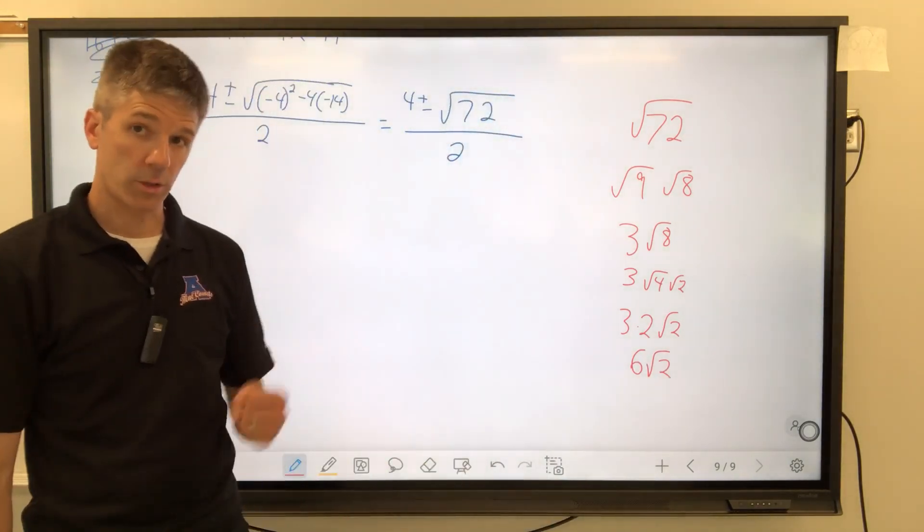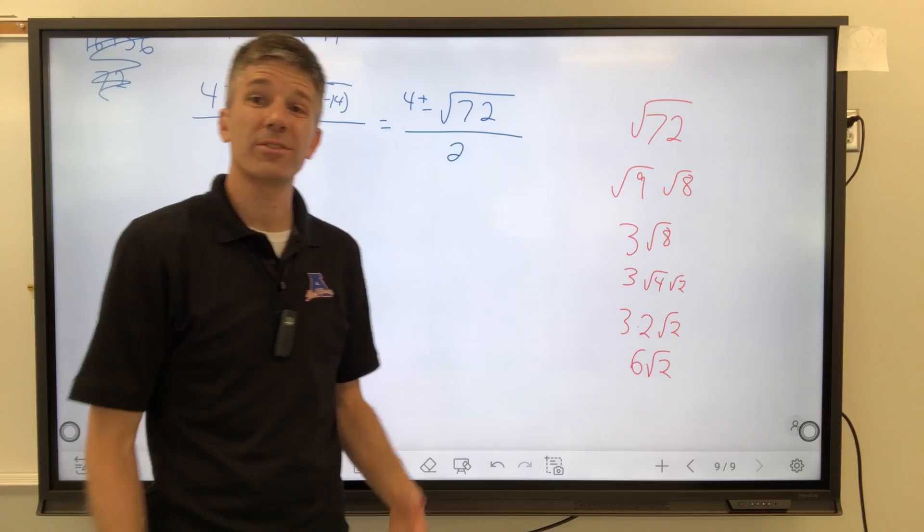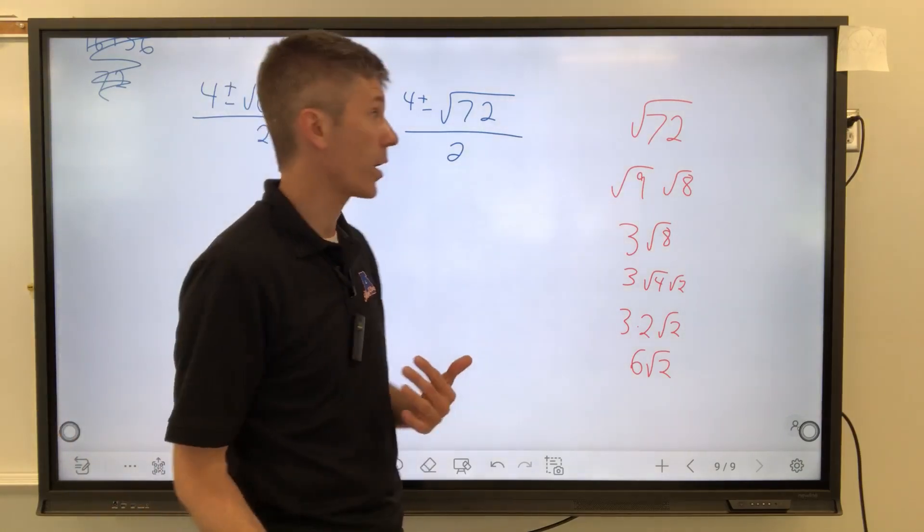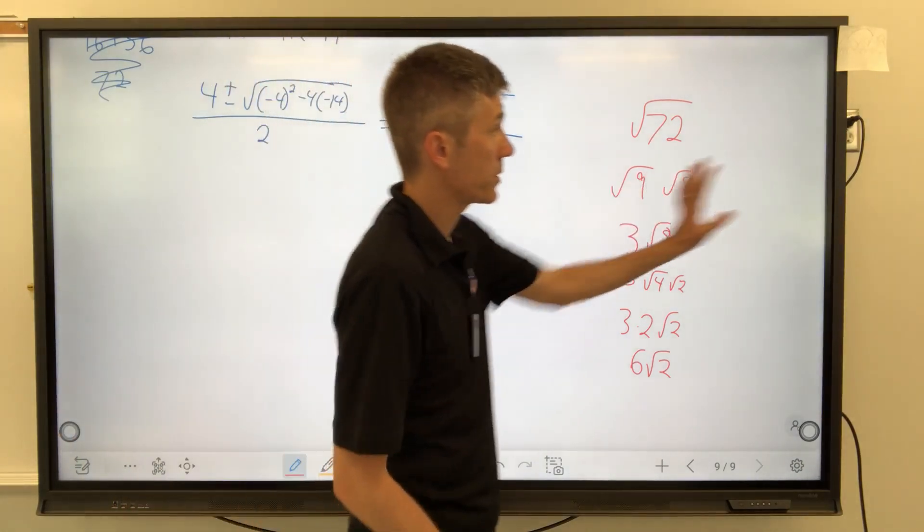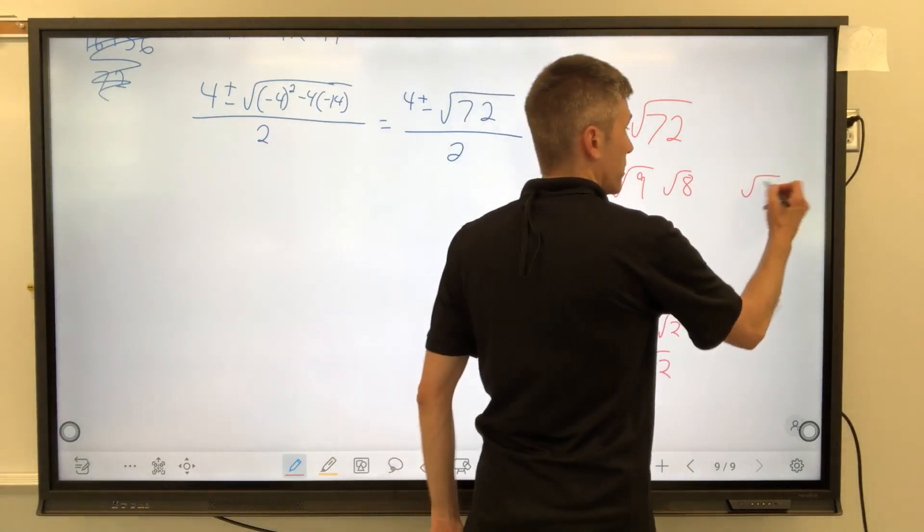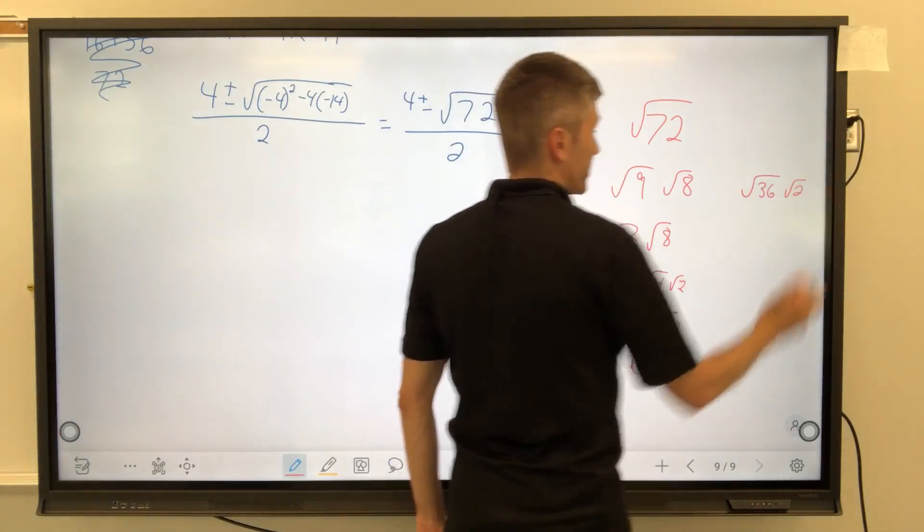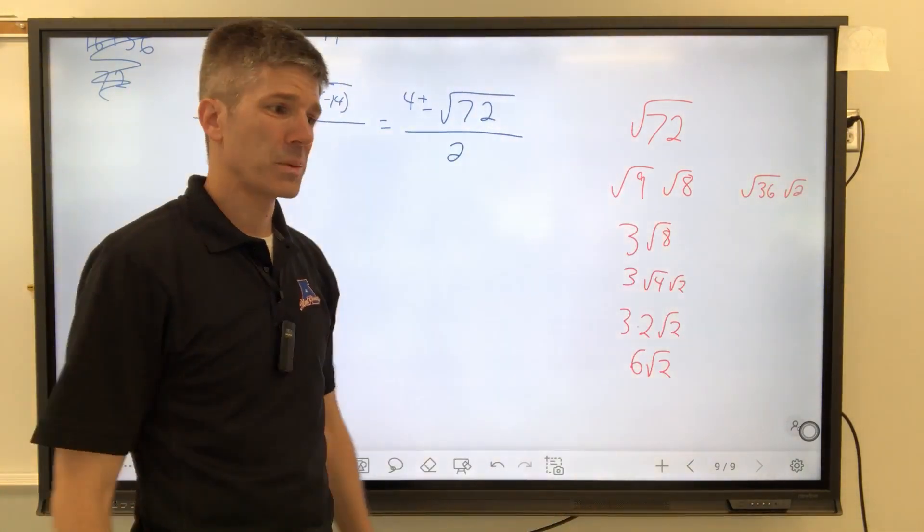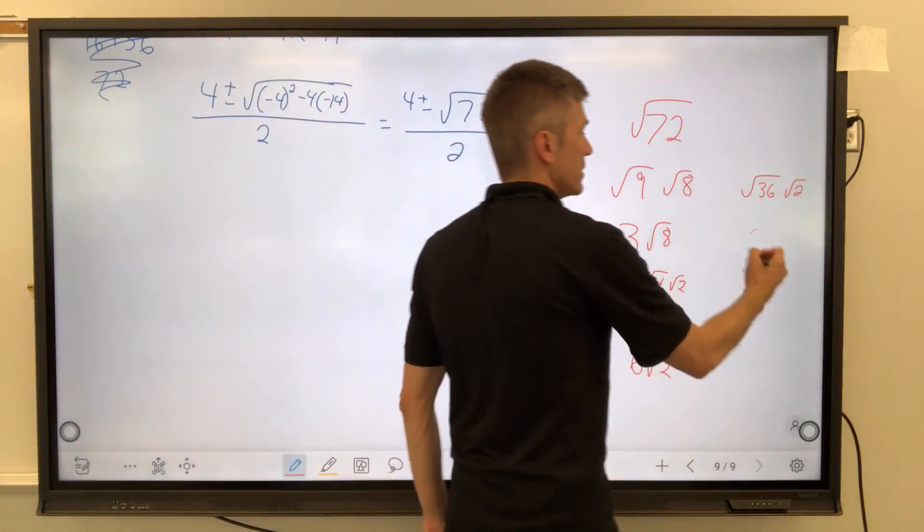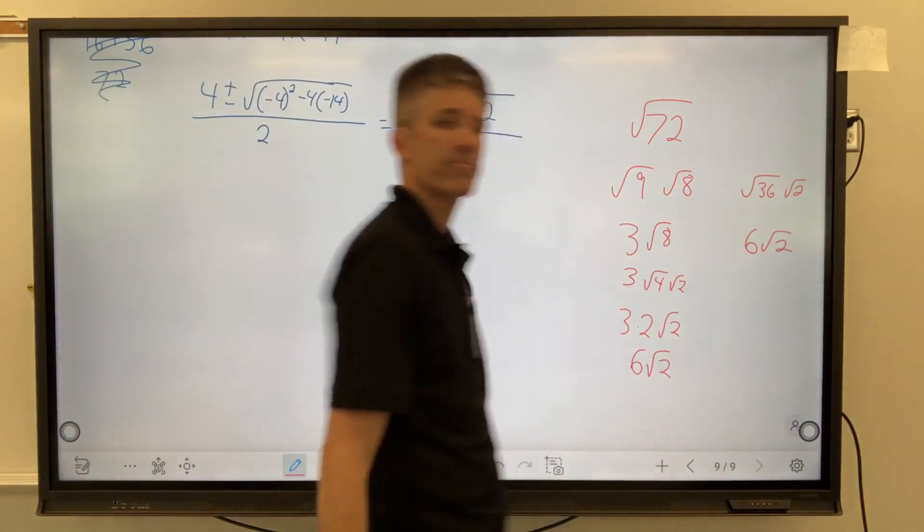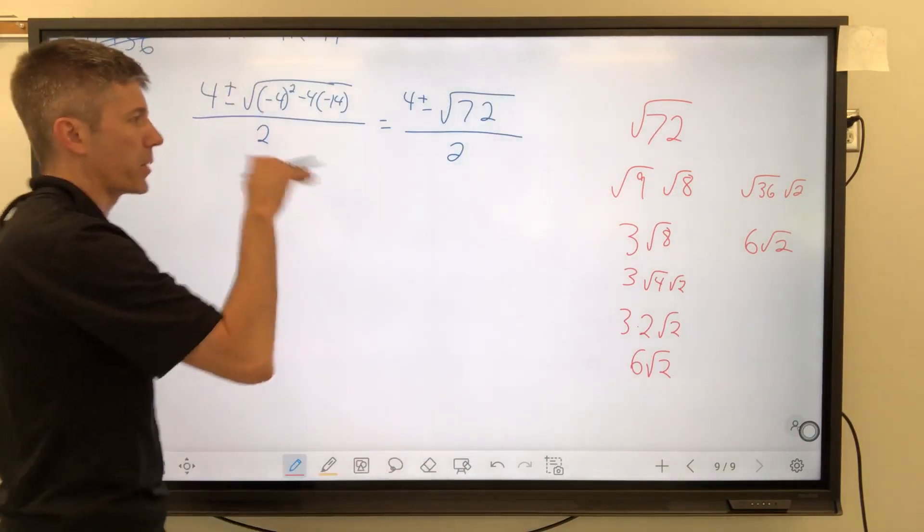Now, shortcut. Not much of a shortcut, but you just got to think of the largest perfect square that goes into it. So, I'm going to do it again over here. 72 is 36 times 2. Not obvious. Most people don't think like that, and that's fine. 6 square root of 2. Much faster. Just think about the biggest perfect square.